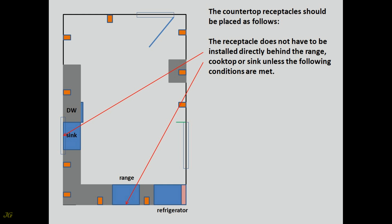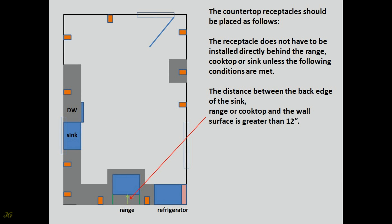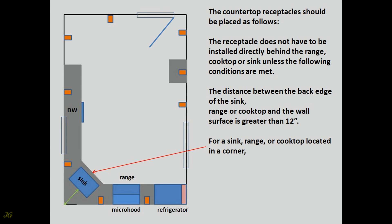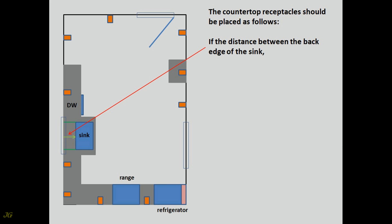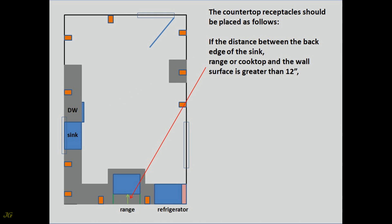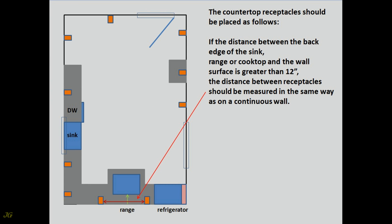The receptacle does not have to be installed directly behind the range, cooktop, or sink unless the following conditions are met: the distance between the back edge of the sink, range, or cooktop and the wall surface is greater than 12 inches. For a sink, range, or cooktop located in a corner, if the distance from the back edge to the corner is greater than 18 inches, the distance between receptacles should be measured in the same way as on a continuous wall.